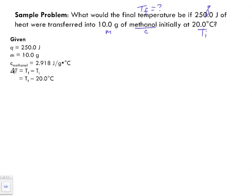And now the thing we need to be careful with here is our delta T is equal to Tf minus our Ti—our final temperature subtracted by our initial temperature.